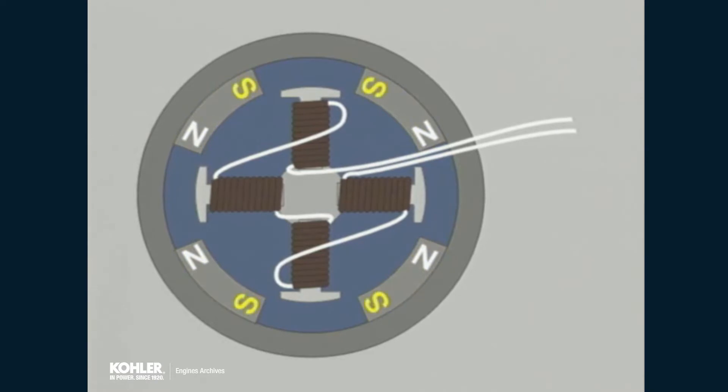Magnets are installed with like poles adjacent to one another. The construction of the stator is such that the adjacent north poles align with alternating stator posts. The remaining posts align with the adjacent magnetic south poles. The result is a flow of magnetic flux from north poles through the stator core, returning to the south poles.